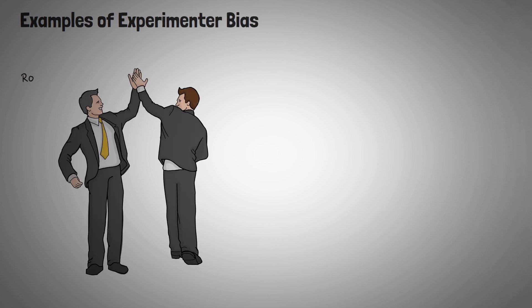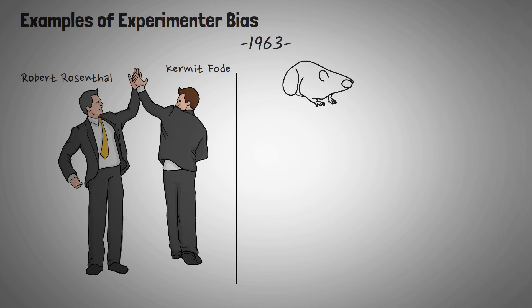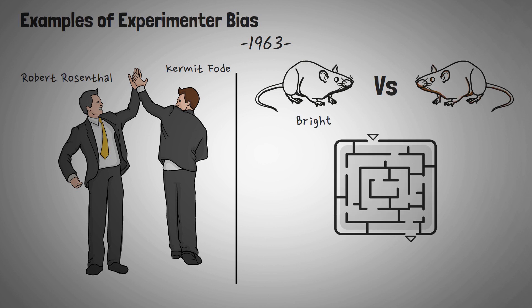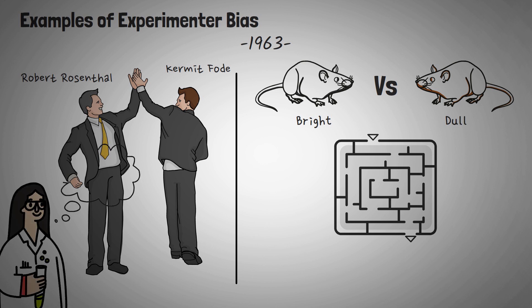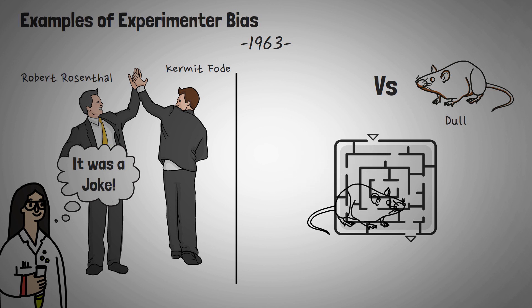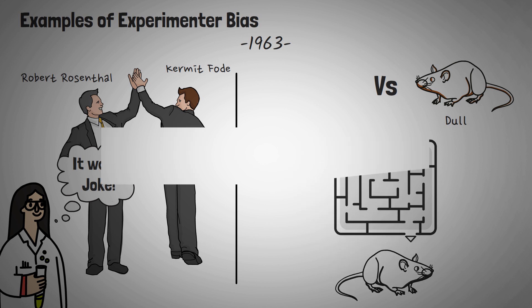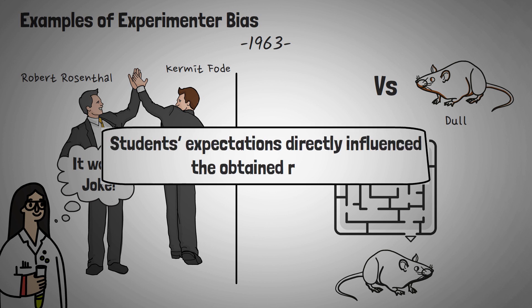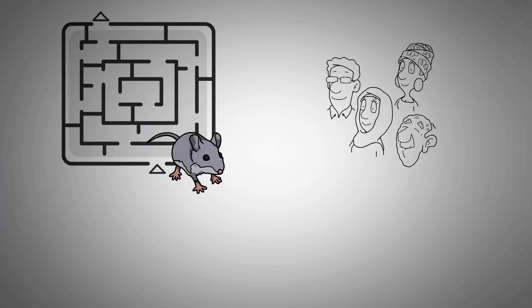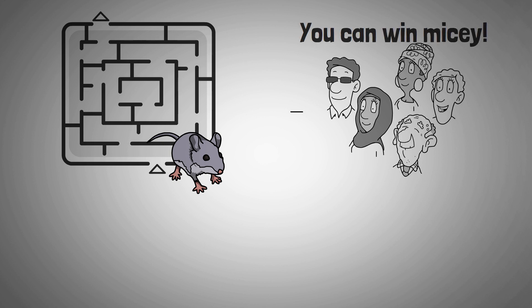One of the best-known examples of experimenter bias is the experiment conducted by psychologists Robert Rosenthal and Kermit Fode in 1963. Rosenthal and Fode asked two groups of psychology students to assess the ability of rats to navigate a maze. While one group was told the rats were bright, the other were convinced they were assigned dull rats. In reality, the rats were chosen randomly with no significant difference between them. Interestingly, the students told their rats were maze-bright reported faster running times than those not expecting their rodents to perform well. The students' expectations directly influenced the obtained results, showing how outcomes can be modified by the interaction between experimenter and subject.